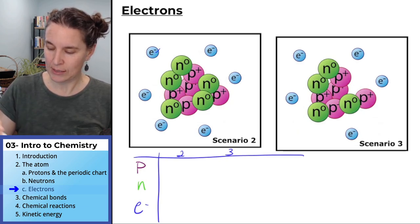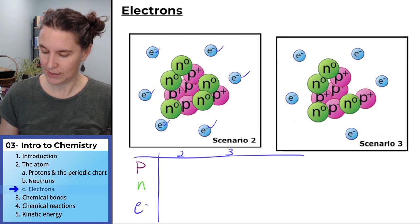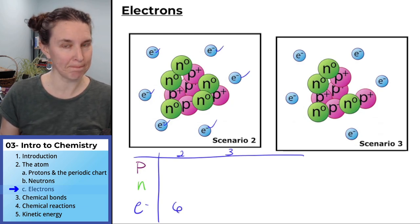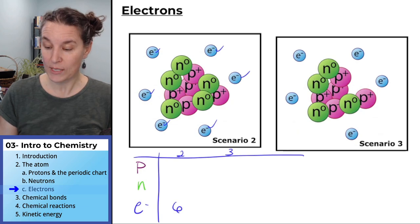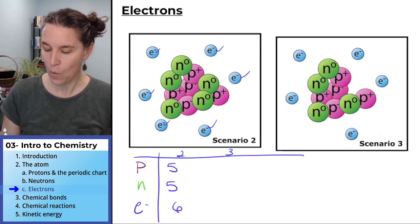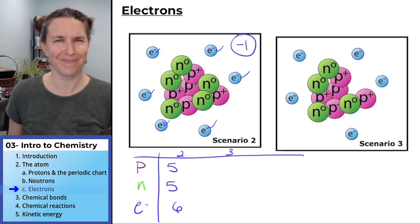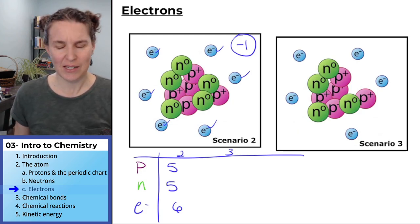The electrons in scenario two, one, two, three, four, five, six. There's six of those guys. The plot thickens. We still have five neutrons. However, we have one, two, three, four, five protons. We have that scenario that I was just talking about where we had one extra electron. And that means the net charge of this thing is going to be negative one. You cool with that?